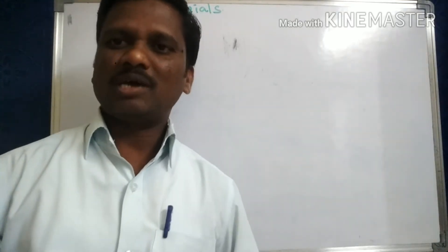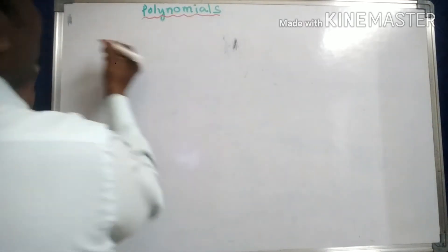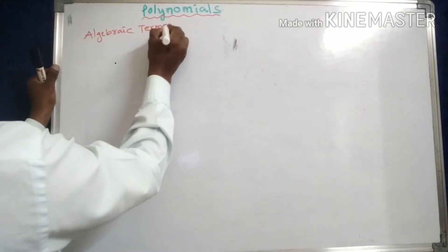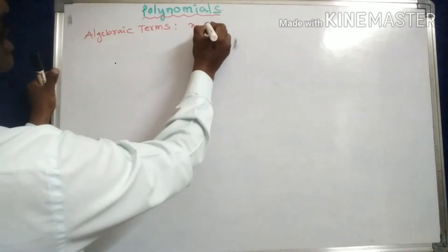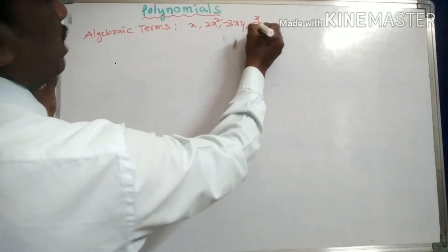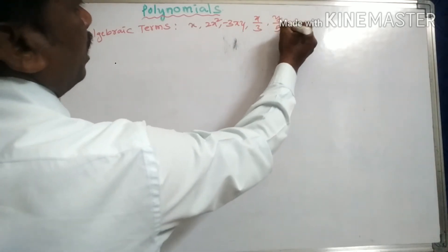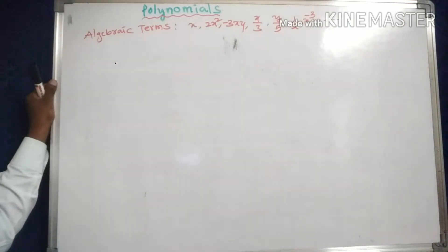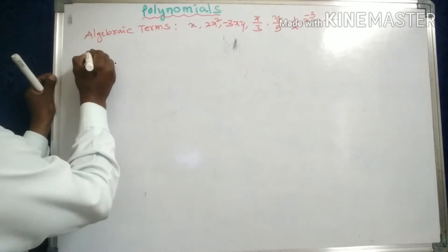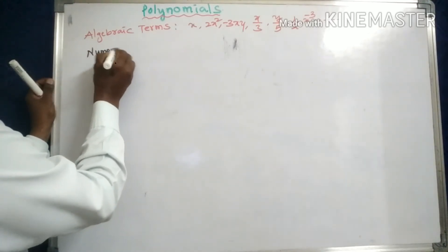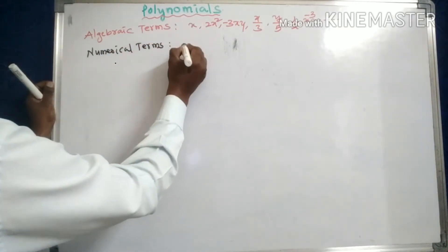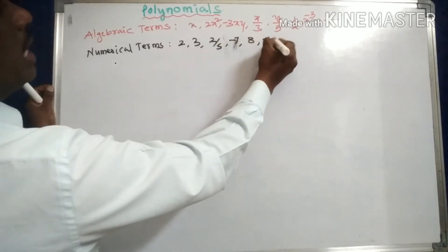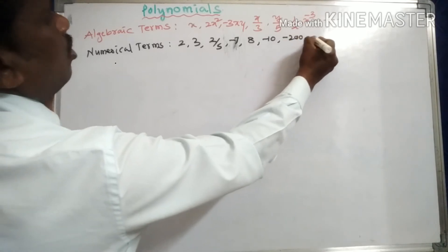Today we are going to learn about polynomials. We already know algebraic terms — for example, x, 2x squared, minus 3xy, x by 3, y by 5, and 1 by x, minus 3, and so on. These are all different algebraic terms. Numerical terms are constants like 2, 3, 2 by 5, minus 7, 8, minus 10, minus 20, 200, and so on.